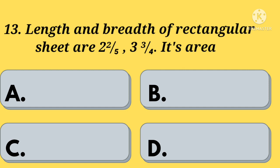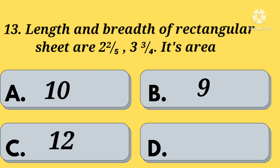The length and breadth of a rectangular sheet are 2 and 2 by 5, and 3 and 3 by 4. Then its area is — Option A: 10. Option B: 9. Option C: 12. Option D: 5. Your time starts now.